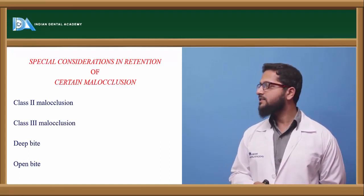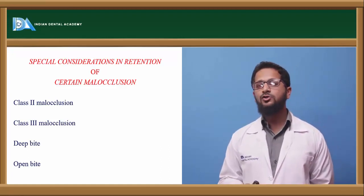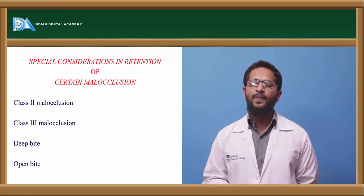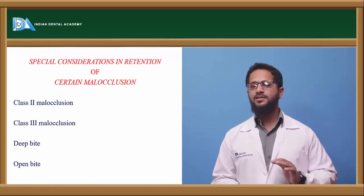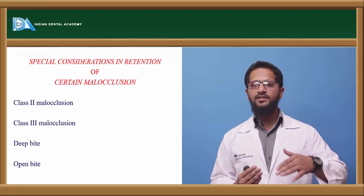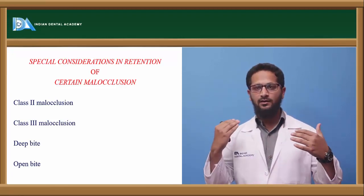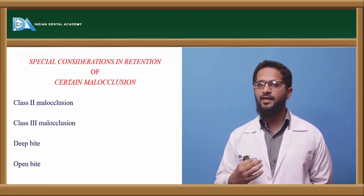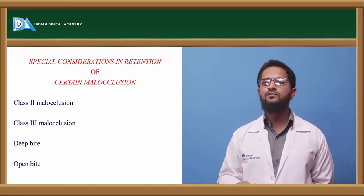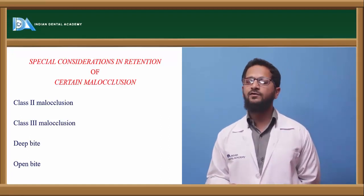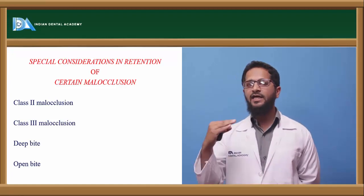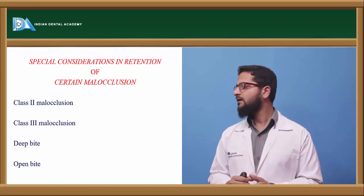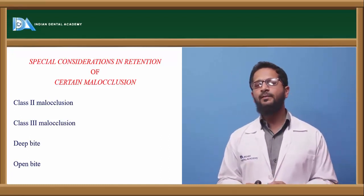For deep bite, the appliance commonly used for correction is the anterior bite plate, constructed so that when the lower incisors contact the bite plate, there is occlusal clearance between upper and lower posterior teeth, allowing posterior eruption and correction of the deep bite. This appliance itself can be used as a retainer after correction, but the height of the bite plate should be reduced to allow proper intercuspation between the upper and lower teeth.